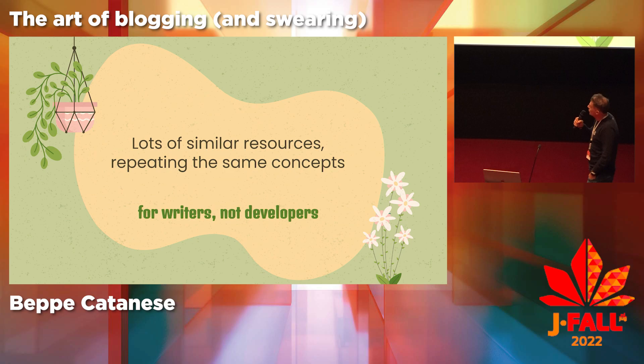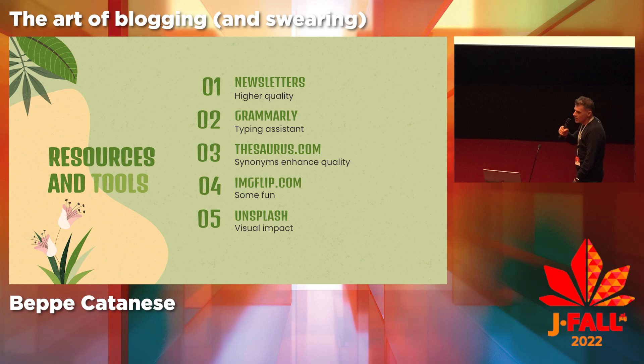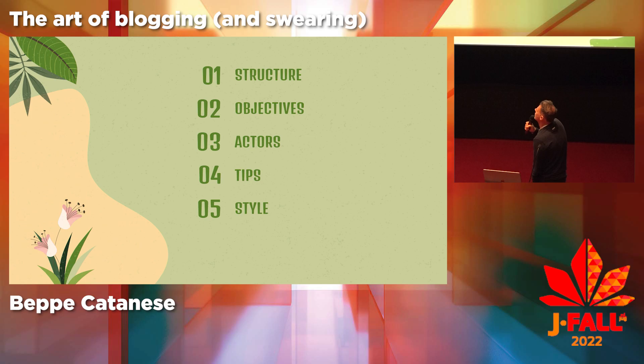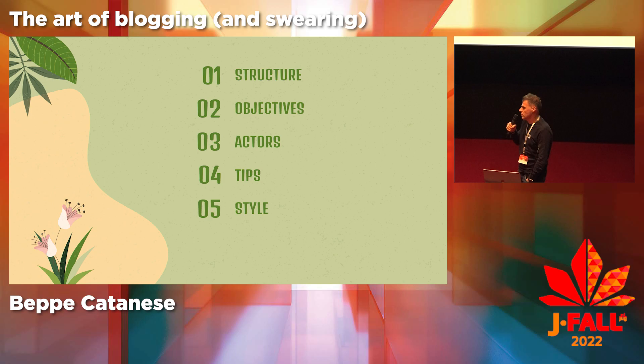There are lots of writers out there you can learn from. But I think you should always choose your own framework, your own style — it's your story, there's no right or wrong. It's a lot more authentic. We'll look at some ideas for structure: the goal of the article, who you're writing for, some tips, and notes about style. In terms of structure, what's really important is a good introduction — starting the article nicely — and also closing with some references, because the developer likes to follow up.